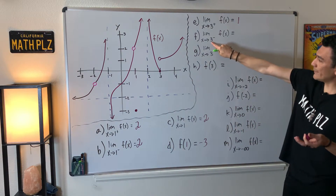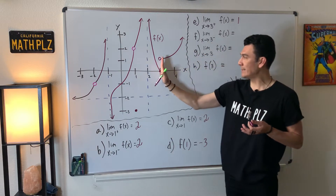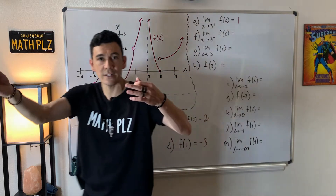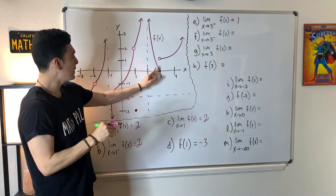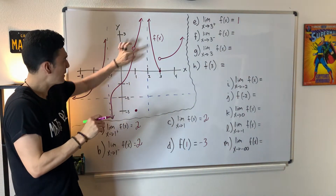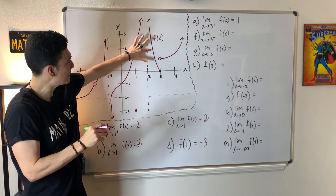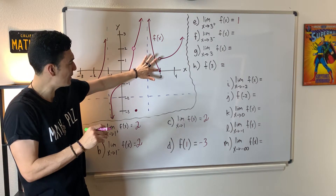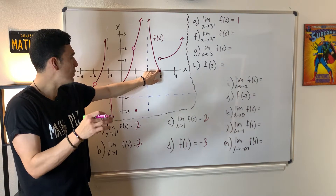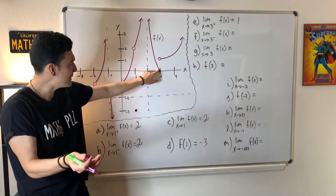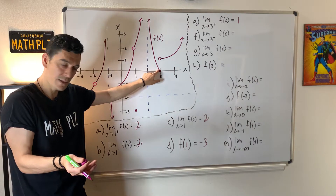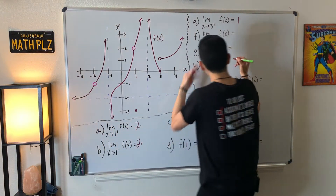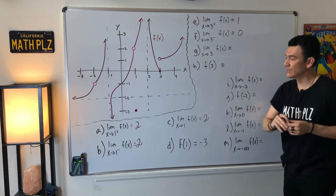Now let's approach three but from the left-hand side. Approaching three from the left — stopping close enough — the y coordinate appears to be zero. So for this example, the answer is zero.